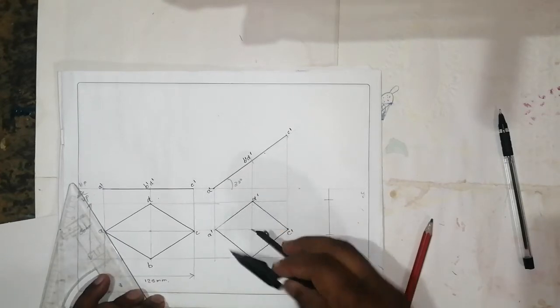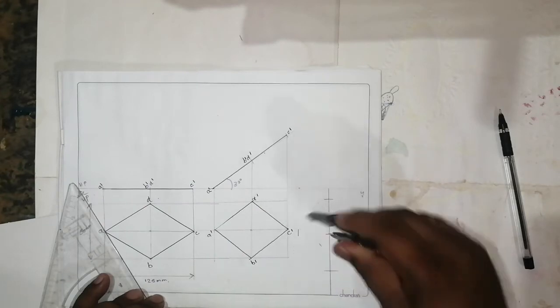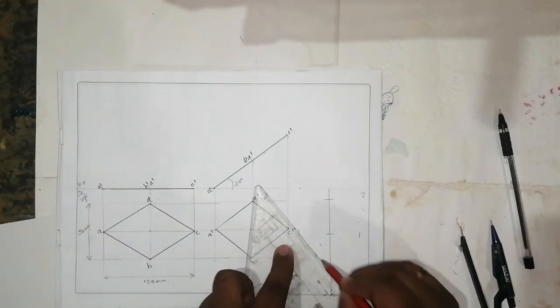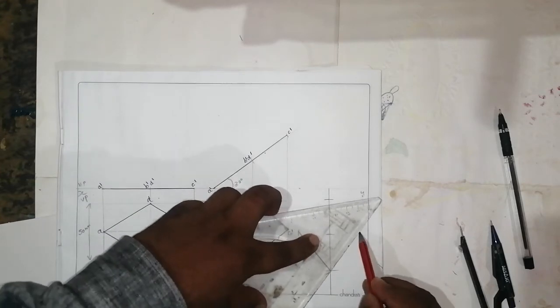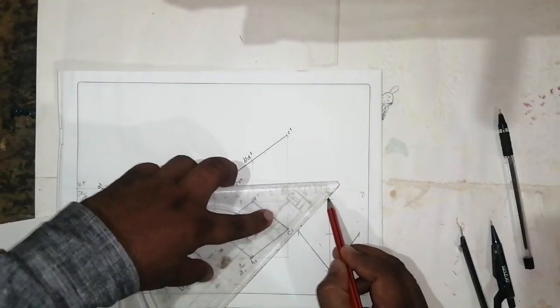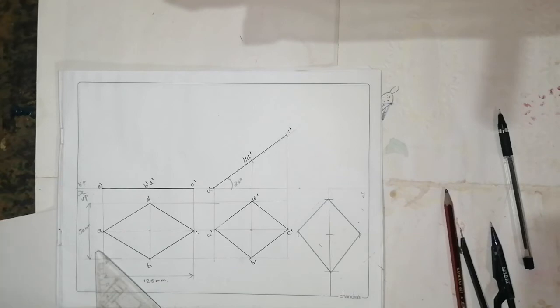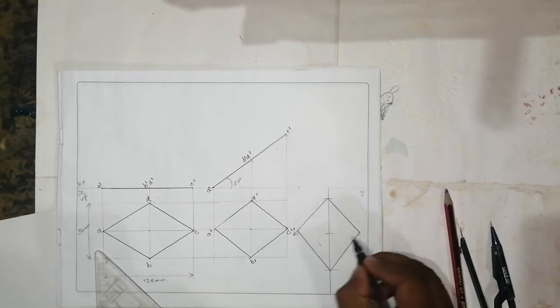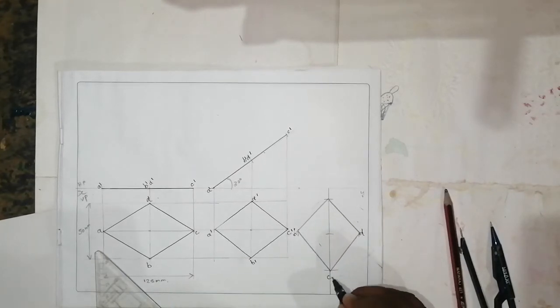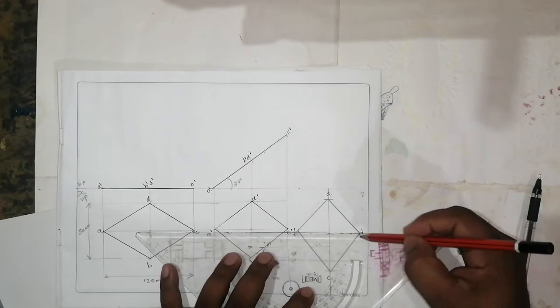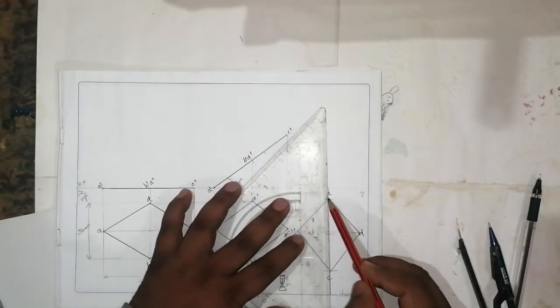From the middle, D and B, cut an arc. So the rhombus will come like this. This is going to be B, D, C, and A. Draw the projection lines.